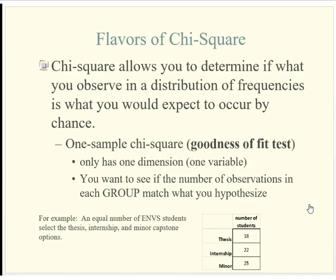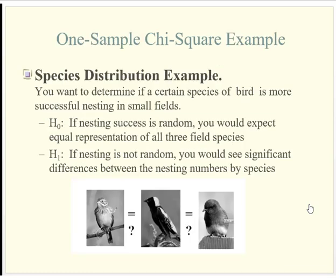The chi-square goodness-of-fit is really quite versatile. Remember, this is an inferential test — it's not just describing how students pick their capstone for the data you collected, but making an inference about the larger population. Now let's look at this with some real data. Imagine you're studying field-nesting bird species to understand competitive advantage, and you want to see if a certain species is more or less successful nesting in small fields around Vermont. The null hypothesis is that nesting success is random and all three species are equally competing.